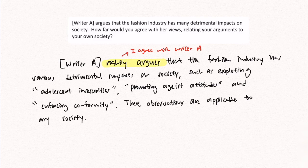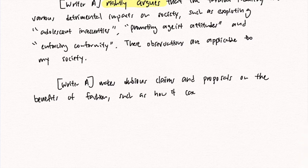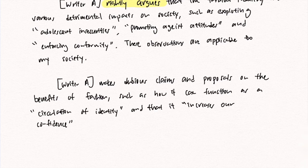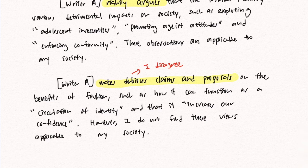If you want to disagree with the writer without using the phrase 'I disagree,' you can write something along the lines of: Writer A makes dubious claims and proposes on the benefits of fashion, such as how it can function as a circulation of identity and how it increases our confidence. However, I find that these views are not applicable to my society. In this case, we are clearly disagreeing with the writer by using the phrase 'makes dubious claims.' This is another way to write your introduction in a more sophisticated manner without using the common terms 'I agree' or 'I disagree.' The introduction should be short and sweet — two to three sentences — and save the bulk of your time for the body paragraphs, which will give you most of the marks.